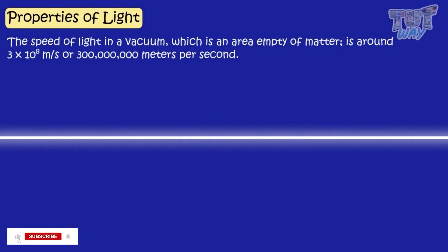Light travels very fast. The speed of light in a vacuum, that is an area empty of matter, is around 3 multiplied by 10 raised to the power of 8 meters per second.